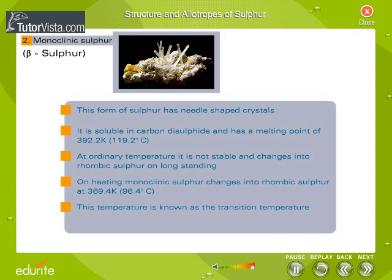Monoclinic or beta-sulphur has needle-shaped crystals. It is soluble in carbon disulfide and has a melting point of 392.2 Kelvin or 119.2 degrees Celsius. At ordinary temperature it is not stable and changes into rhombic sulphur on long standing. On heating, monoclinic sulphur changes into rhombic sulphur at 369.4 Kelvin or 96.4 degrees Celsius, which is known as the transition temperature.